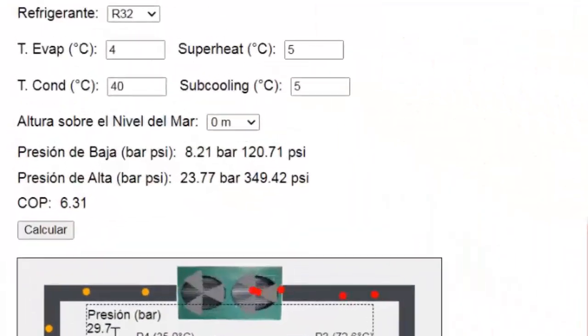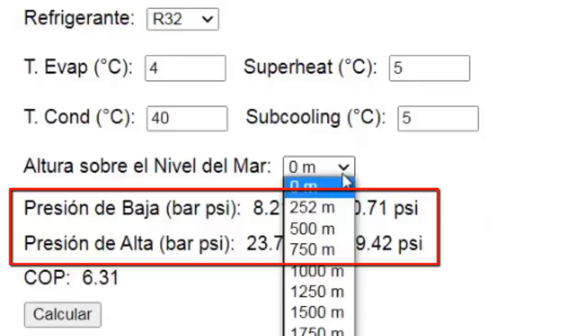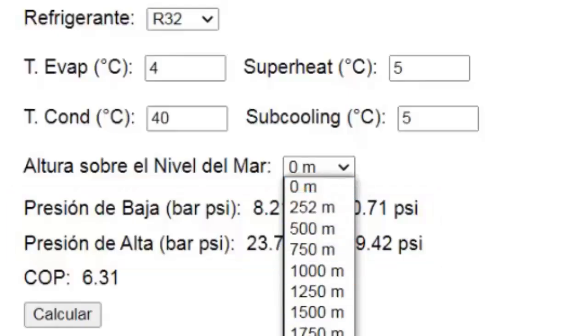The pressure indicated by the system's gauge depends on the altitude above sea level. In this field of the simulator, we can select the altitude at which the equipment is located. This allows us to obtain a more accurate gauge pressure, which is crucial for high-precision refrigeration systems.